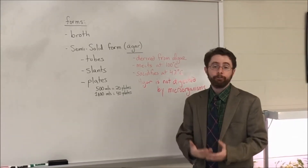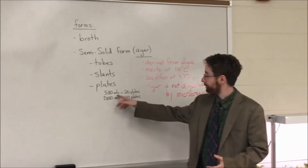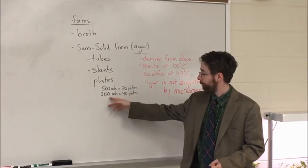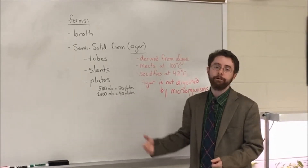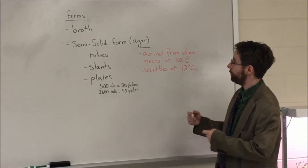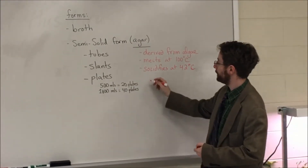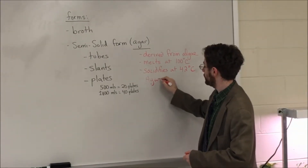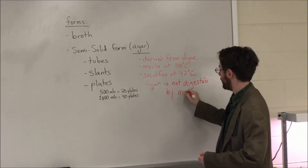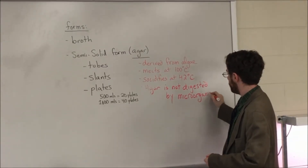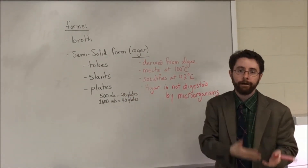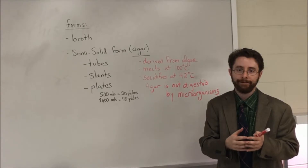So if I want to make about 20 agar plates, I'll prepare about 500 mils of media containing agar. And if I want to make about 40 plates, I'll prepare 1,000 milliliters or 1 liter of agar with my growth media. When we prepare semi-solid forms of our media with agar, it's important to note that the agar is not digested by microorganisms. Therefore, the agar is added to either a chemically defined or a complex media in order to make that preparation.